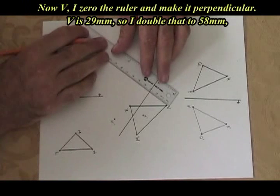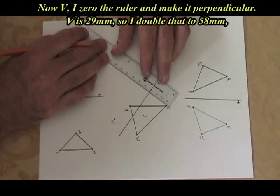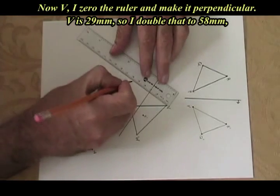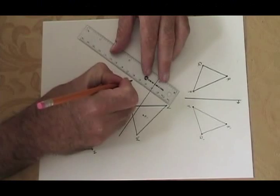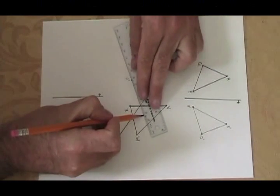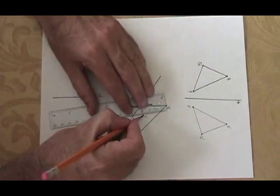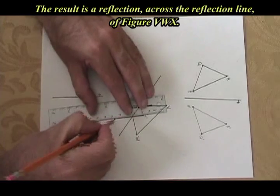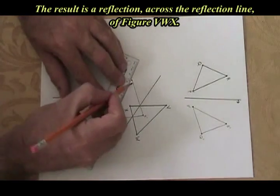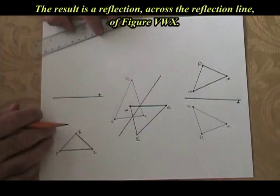Now V, zero it. Make sure the ruler is perpendicular. I see 29 millimeters. I double that to 58 and I put a dot and that's my V'. Connecting the dots results in a figure that is a reflection across the reflection line of figure VWX.